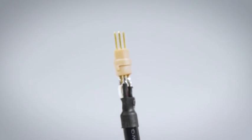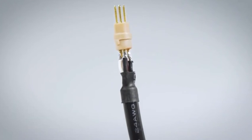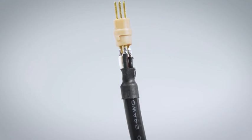If you are using the shield or drain as the 4th conductor, be sure to apply heat shrink around the outer jacket of the wire.